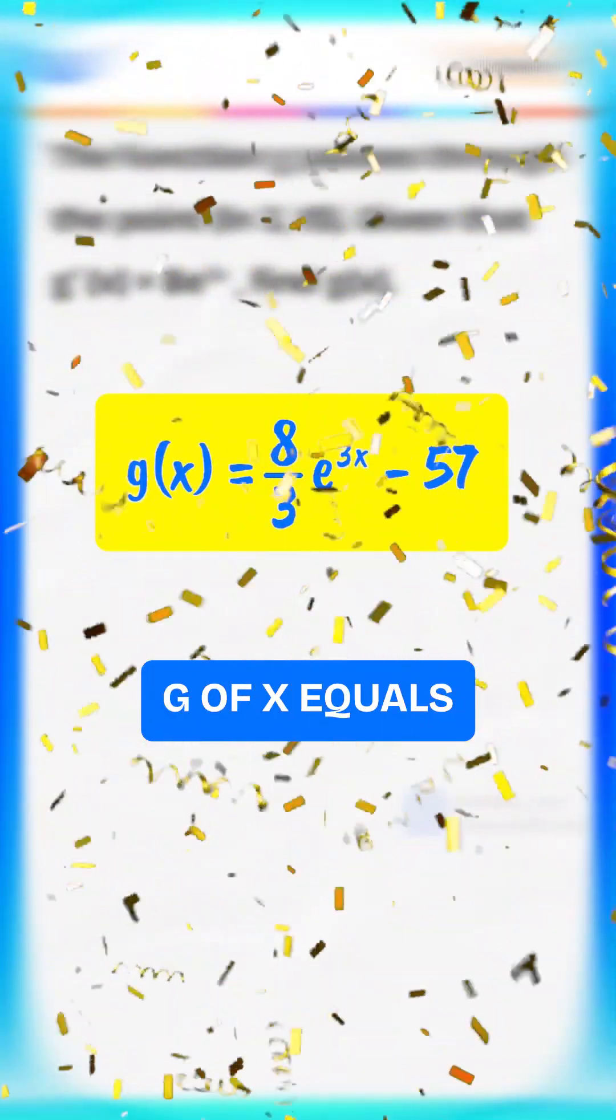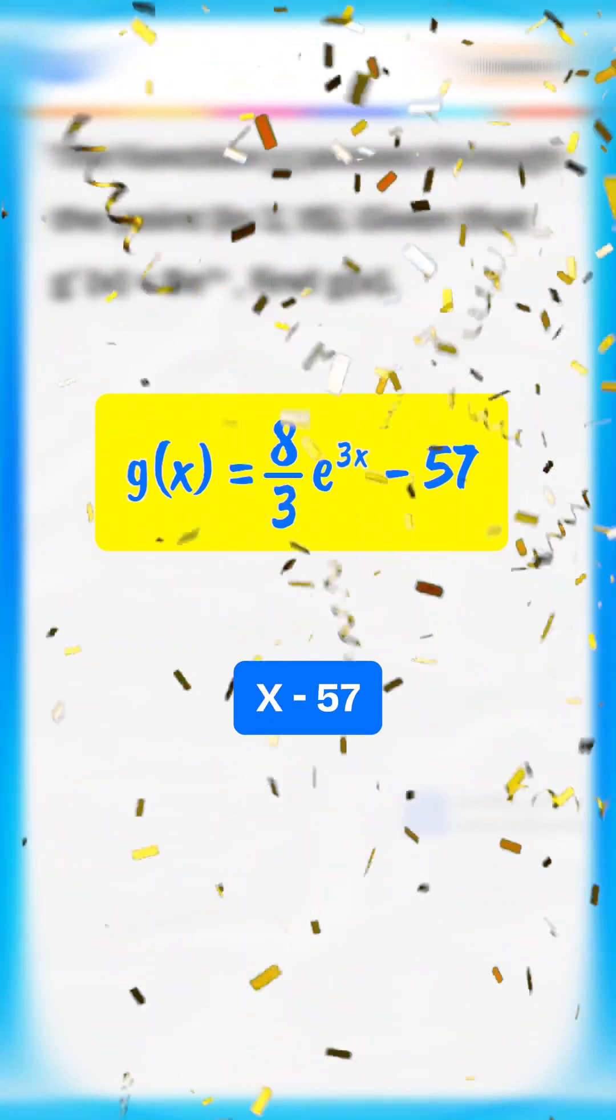Hence, g of x equals 8 over 3 times e to the 3x minus 57.